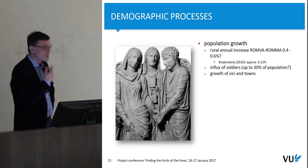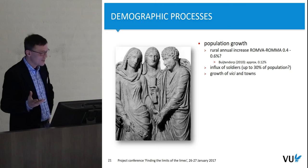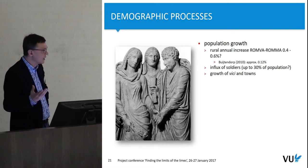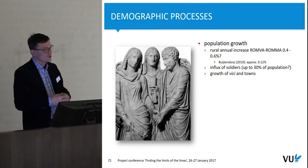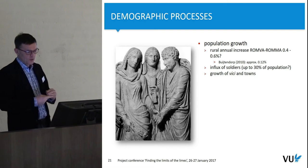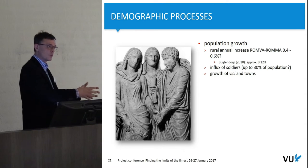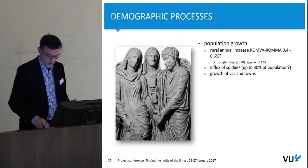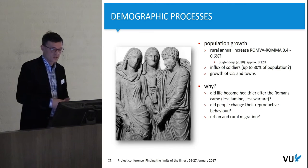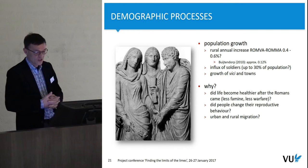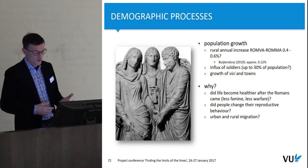Looking at demographic processes and population growth, an annual increase of about 0.5% seems quite plausible based on this, feasible even when some people have suggested it must have been less. We also have to take into account the influx of soldiers and that the urban population has to come from somewhere. Did life become healthier after the Romans came? Did people change their reproductive behavior? How big was the urban-to-rural migration? There are very few answers to that.